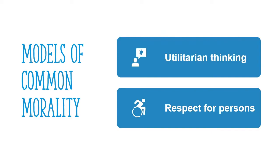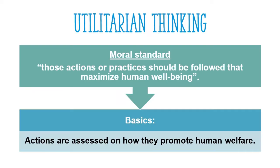To further look at techniques for developing common morality, we are going to look at two schools of thought: utilitarian thinking and respect for persons. First comes utilitarian thinking, which revolves around one main idea — maximizing cumulative human well-being. Therefore, a person is considered moral if they follow actions that fulfill that goal.